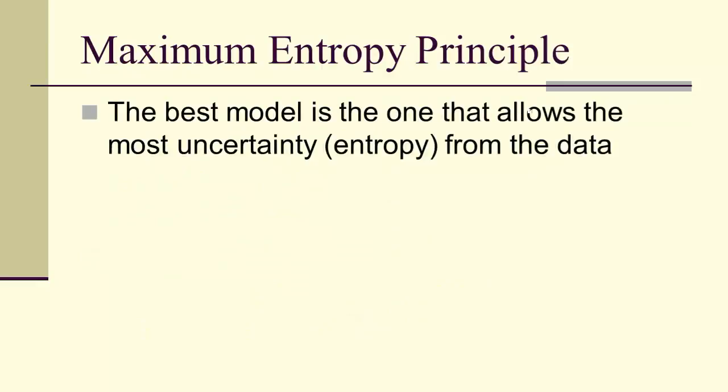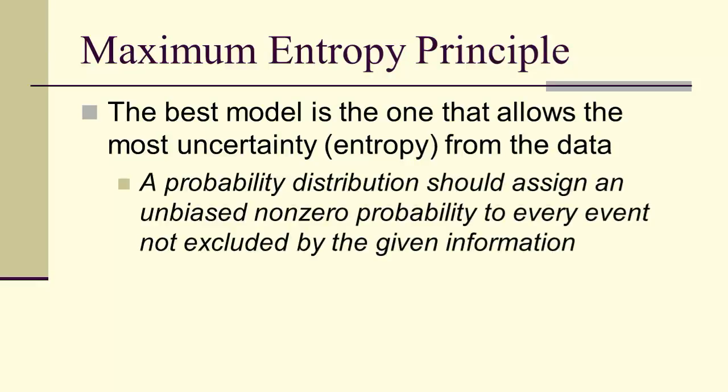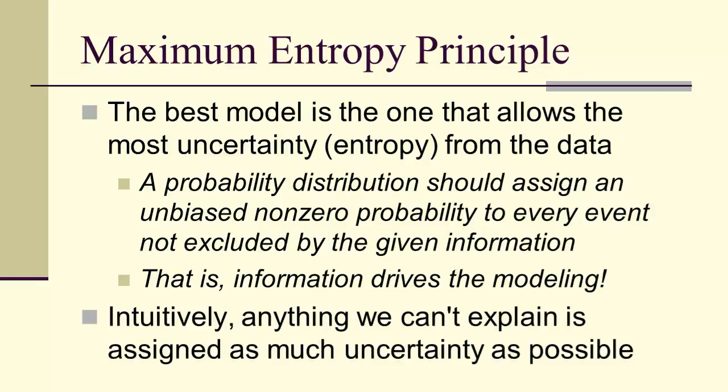The maximum entropy principle says that the best model is the one that allows the most uncertainty from the data. In other words, a probability distribution should assign an unbiased, non-zero probability to every event not excluded by the given information. Information drives modeling. That's what we're getting at. So intuitively, anything we can't explain is assigned as much uncertainty as possible. Or as we said at the very beginning, we model as much as we can the information that's within a data set or coming from a process that produces a data set. But anything we can't explain, we want it to be as uncertain as possible.